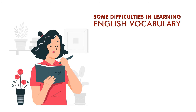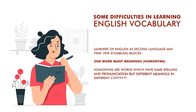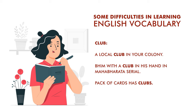Some difficulties in learning English vocabulary: learners of English, especially second language learners, find a few stumbling blocks. For example, one word may have many meanings — homonyms. Homonyms are those words which have the same spelling and pronunciation but different meanings in different contexts.